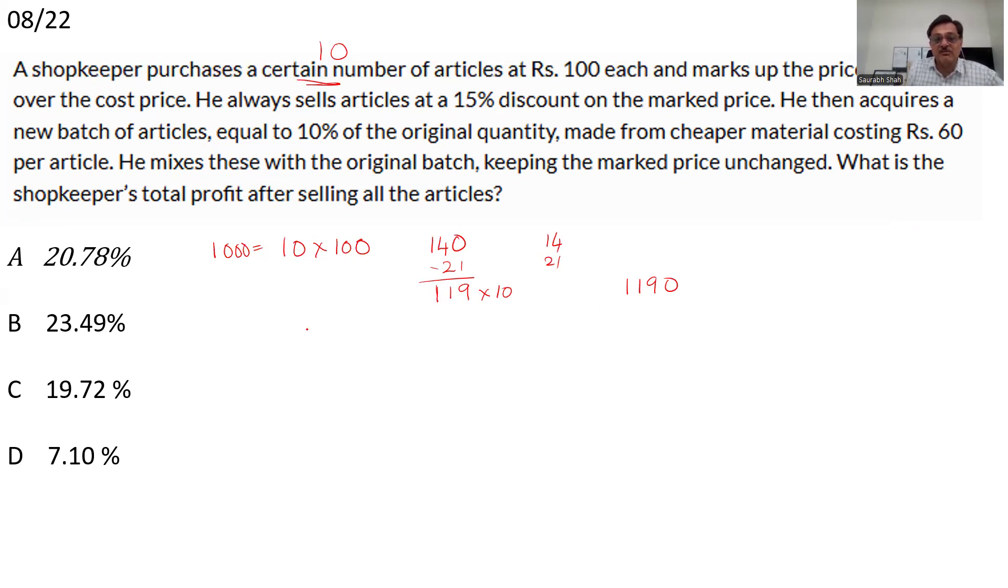140, he has marked up everything at 140, 40% above. And then he is giving a 15% discount. 10% would be 14. So 15% would be 21. He is giving a discount of 21 and he is selling everything at 119. He is going to sell 10 items at 119 and he is going to get 1190 rupees. So this is on the original 10 items. He then acquires new batch of articles. 10%, 10% of 10 is simply one at 60 rupees. So his cost becomes 60. He has just bought one article at 60, his cost becomes 60. He mixes everything with the original. That means he is going to sell this also at 119.